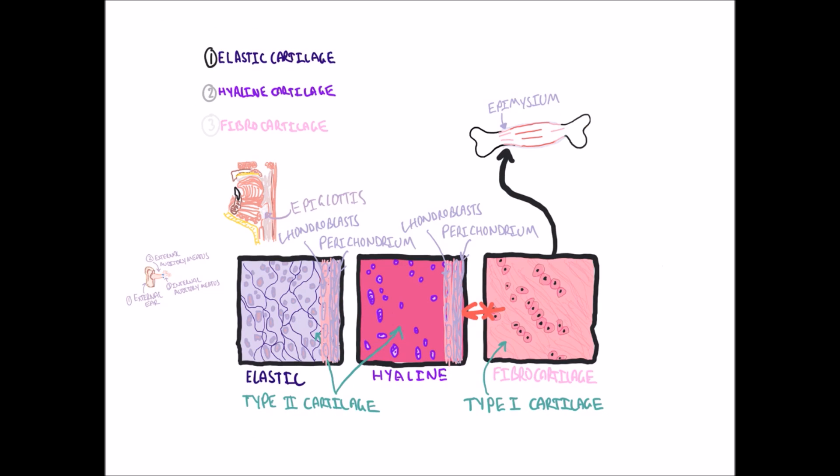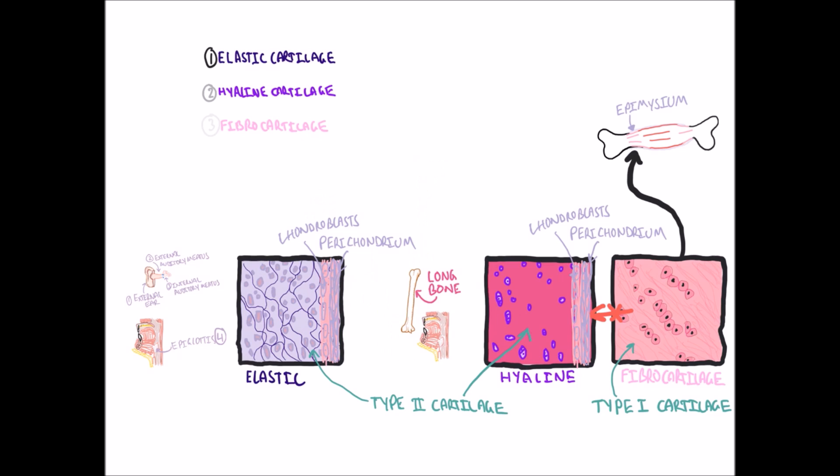Hyaline cartilage is found in the long bones, trachea, nose, joints, and bronchi.